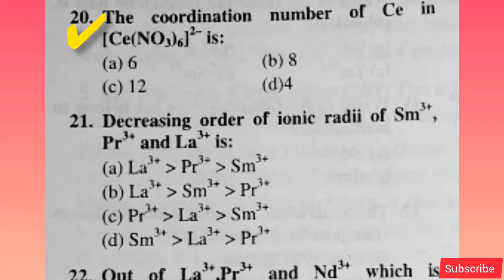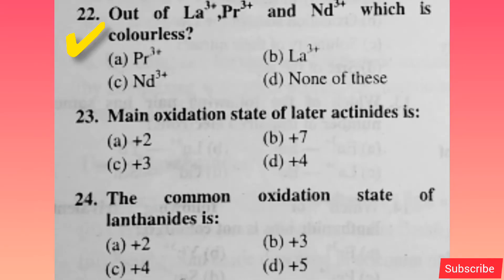The principal oxidation state of lanthanides is — option B is correct. The coordination number of Ce in [Ce(NO3)6]2− is — option C is correct. Decreasing order of ionic radii of Sm3+, Pr3+, and La3+ is — option A is correct.